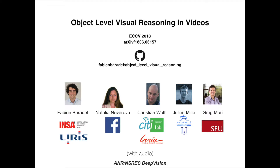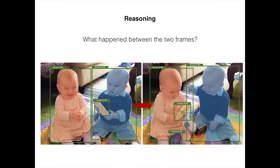We present a new model able to reason in videos on an object level. What happened between these two frames? Humans can easily infer complex actions happening between different moments in time. In this example, we can draw the conclusion that the remote control was taken away and this created unhappiness. This faculty is called reasoning.